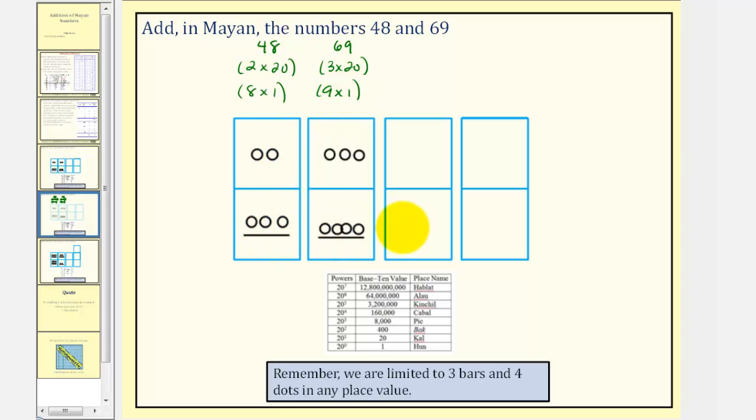To add these, we'll add the symbols horizontally and then perform exchanges as needed. So adding the ones place value, notice how we'd have two bars and seven dots, and then the 20s place value would have five dots.